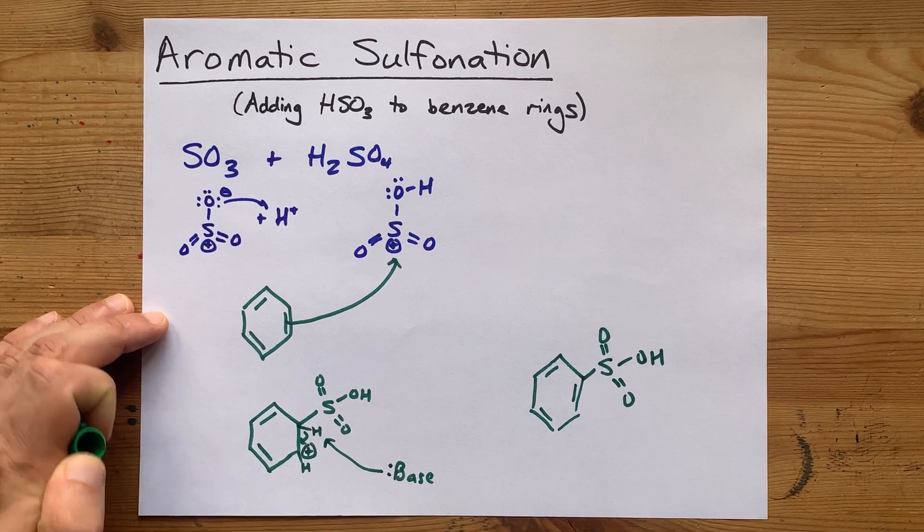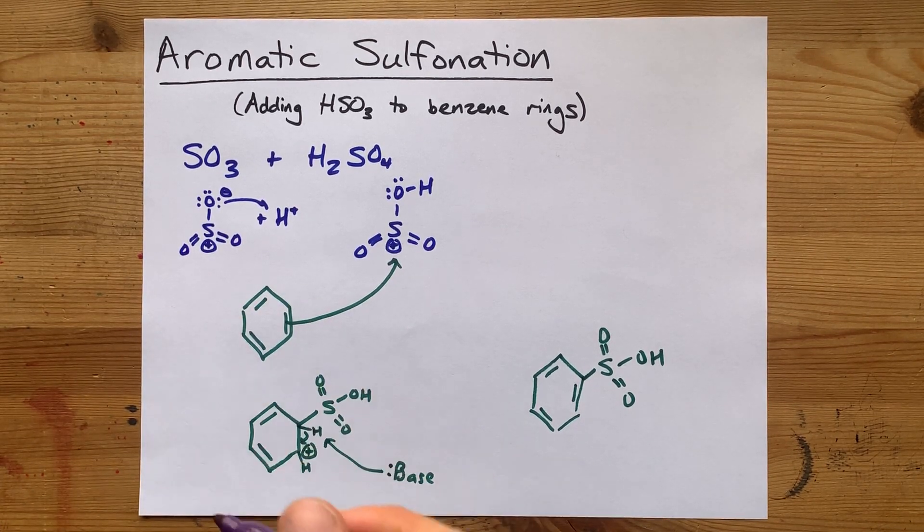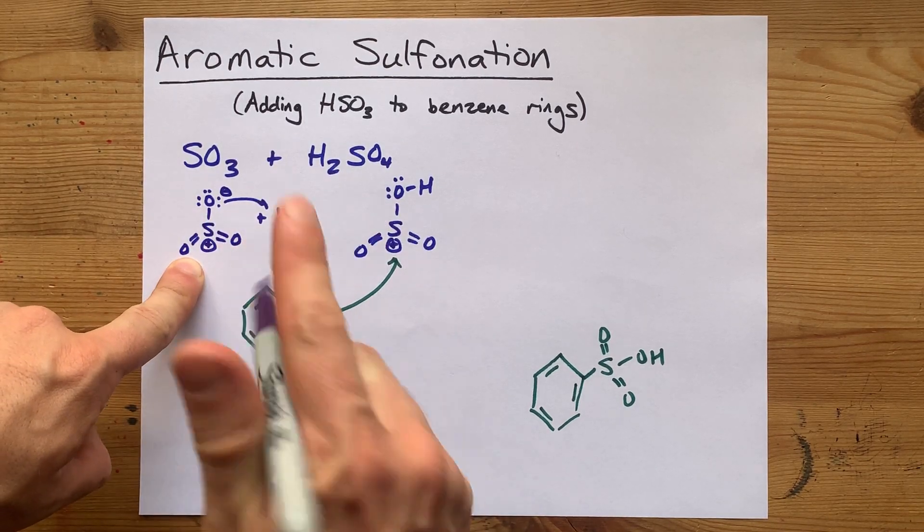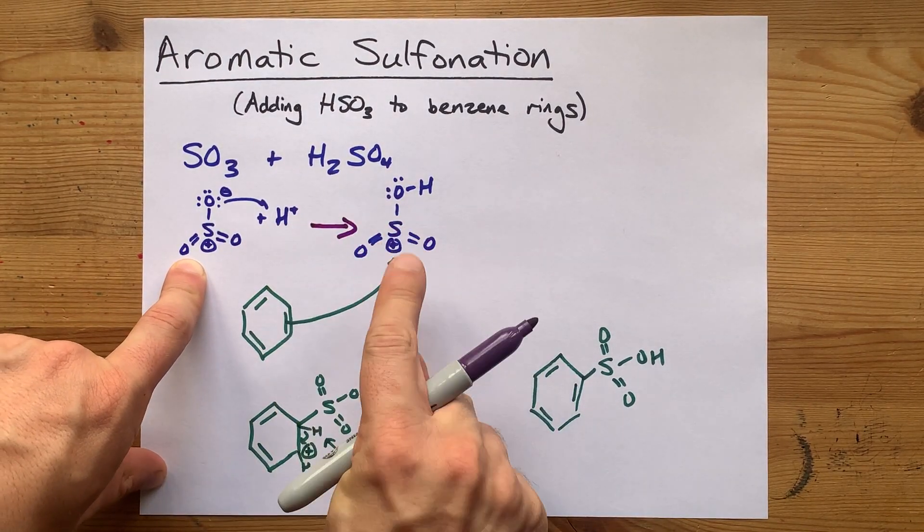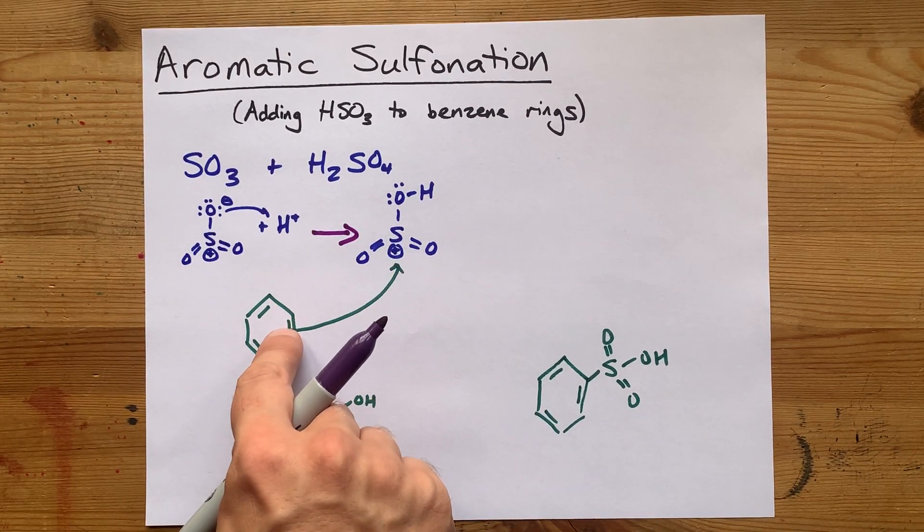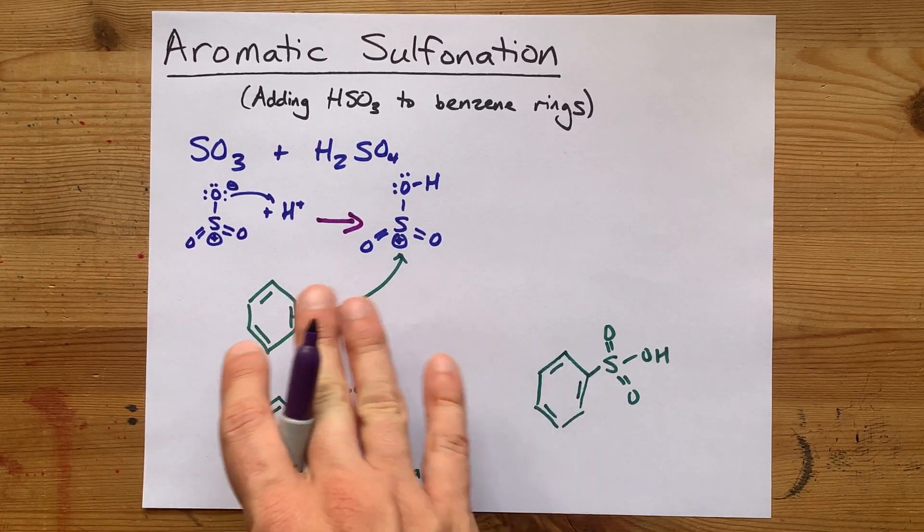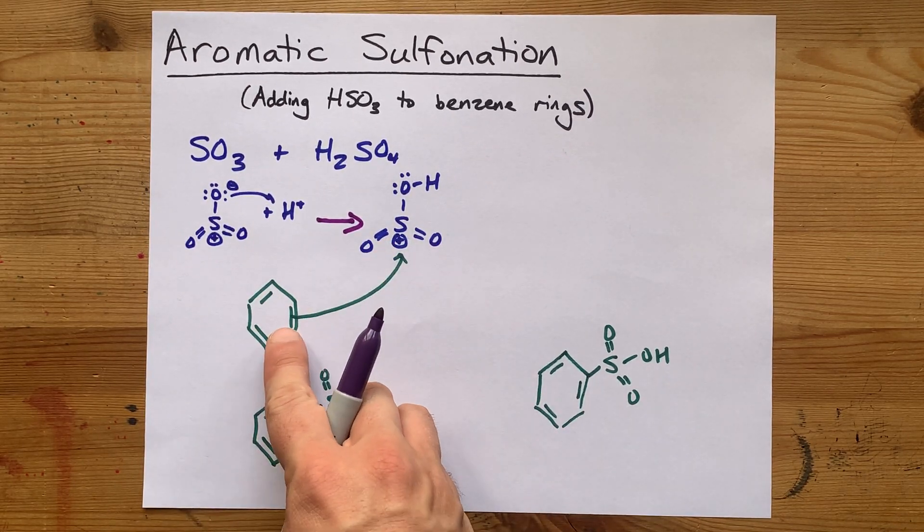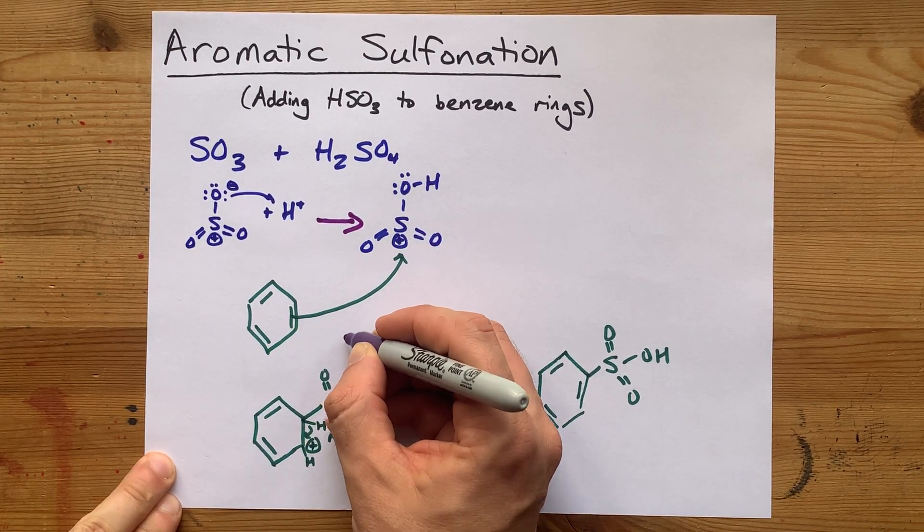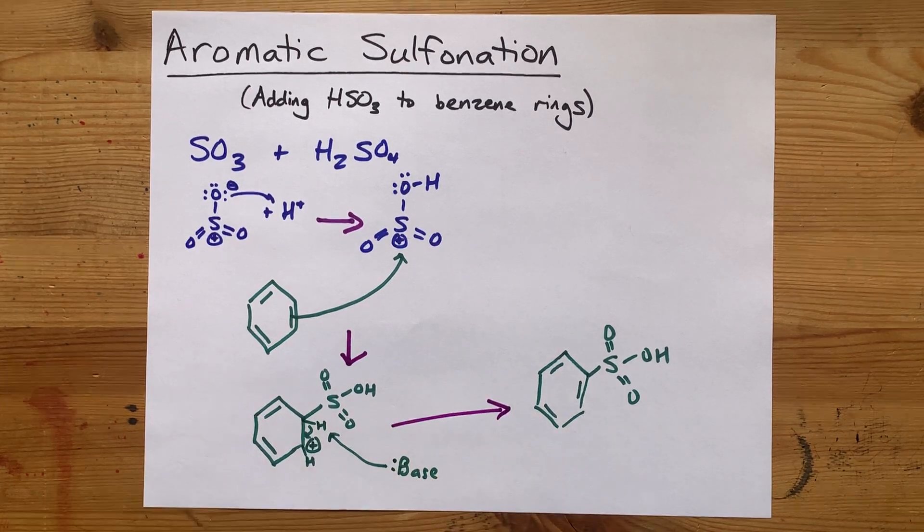This is a mechanism even though I haven't shown too many arrows here. We've got sulfur trioxide getting protonated to become HSO3+. We have an attack of these electrons towards this sulfur that produces this, and then the addition of a base produces that.